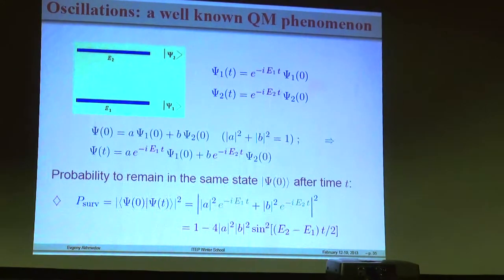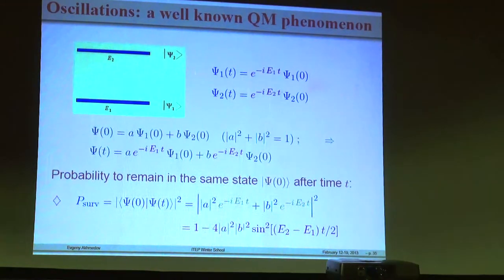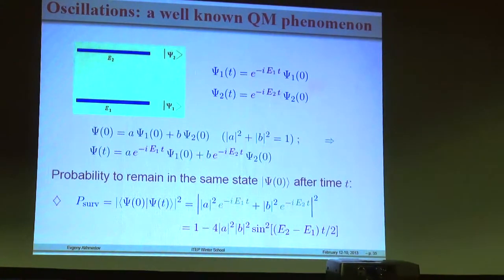Assume we have a linear superposition A times Psi-1 plus B times Psi-2, created at time zero, with |A|² + |B|² = 1. At a later time, each state picks up a phase factor e^{-iE1 t} and e^{-iE2 t}. If we want to find the probability of the system remaining in the initial state, we project the evolved state onto the initial state and take the square modulus. The probability oscillates with time with an amplitude proportional to the product of A and B. If either is zero — a pure state — there are no oscillations. The frequency is given by half the energy difference of the two eigenstates.